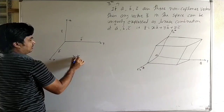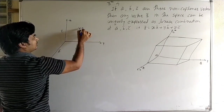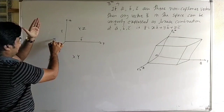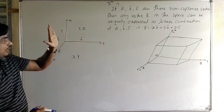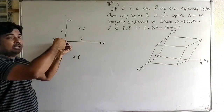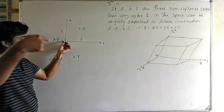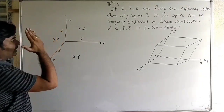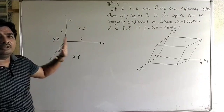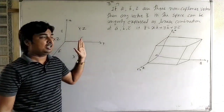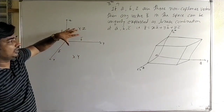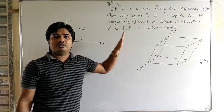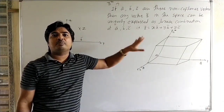It is the xy-plane, it is the yz-plane, and it is the xz-plane. The x-axis is perpendicular to the yz-plane, therefore the x-axis is perpendicular to the xz-plane. To complete a parallel piped — parallel piped means opposite surfaces are parallel.